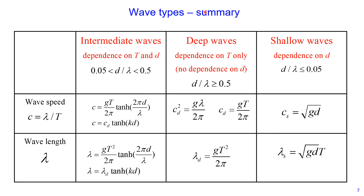For deep waves, the wave speed and wavelength depend on wave period only — not on water depth. For shallow waves, there is dependence on water depth only. And it is only for intermediate waves that we have dependence on both wave period and water depth for wave speed and wavelength.